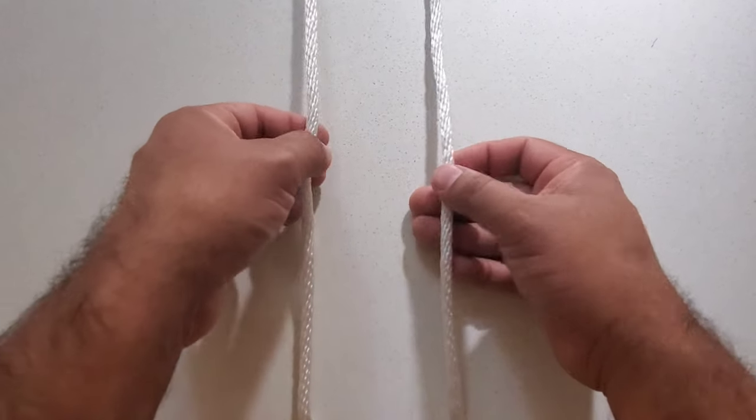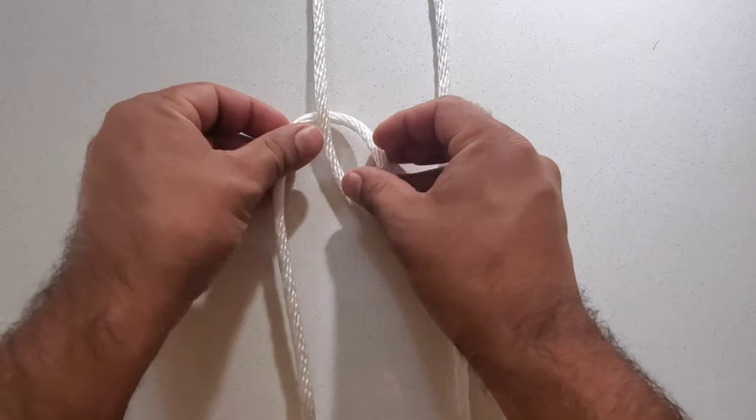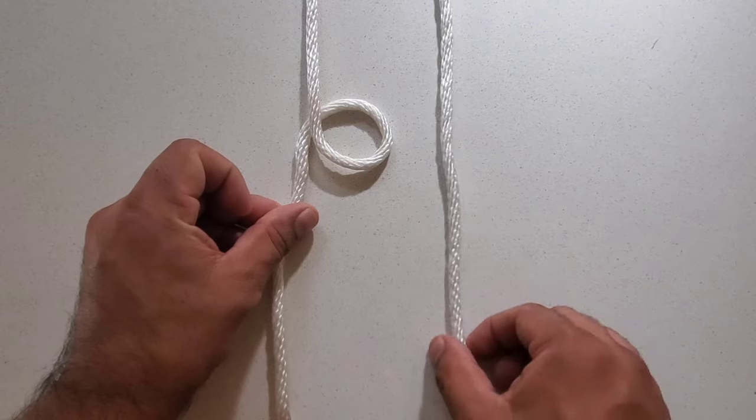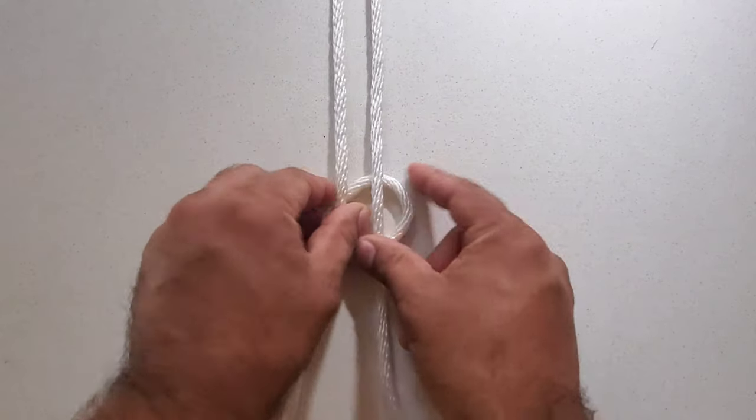So we start off with your two strands of rope. For one rope, you're going to do an underhand loop so that the rope is actually underneath the top part. Then you're going to take the second rope and you're going to place it right on top of the loop portion.